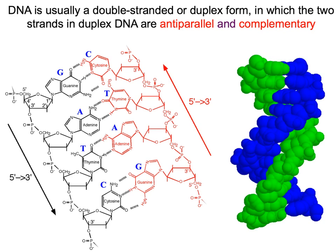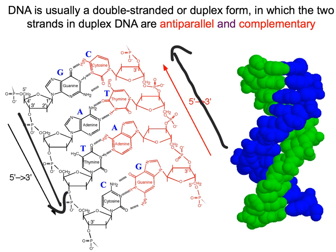This slide uses DNA to illustrate the three main principles we need to understand: anti-parallel complementarity and base pairing. A strand of DNA, like the red one over here, has a directionality to it. 5' and 3' are just the names of the oxygens and the carbons on the sugars in the backbone. The point is there is a directionality — one strand is going 5' to 3' one direction, and the other is going 5' to 3' the other direction. That is, they are anti-parallel.